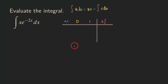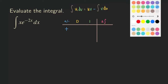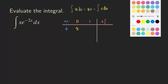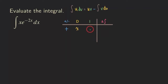Let's get started on the problem. First, we are going to put a plus sign in the first column. Then we choose our u. We let u equal x because it's easy to differentiate and we get something simpler. Once we've chosen u to be x, the rest must be dv, so e to the negative 2x times dx is our dv.